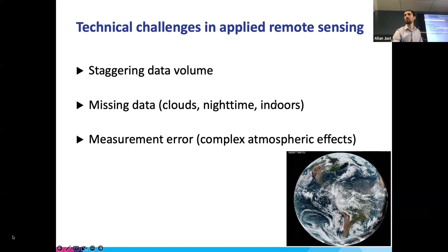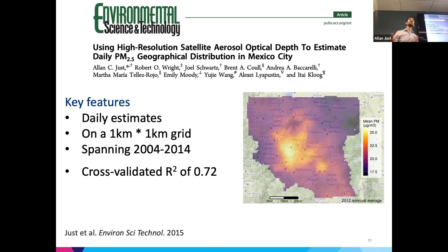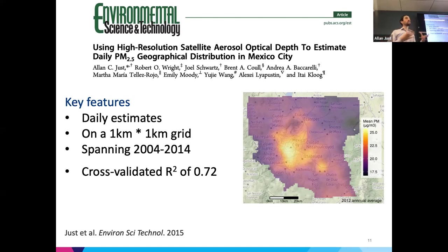One of the first projects I worked on was building a spatio-temporal model at a one-kilometer resolution for Mexico City over the course of a couple of years. This model allowed us to leverage health data from cohorts of participants in human health studies. The basic mechanism of assigning exposures — what we think people would breathe on average where they live — is based on a linkage from your residential address history. If you're prospectively enrolling people, you ask them where they live and stay up to date on whether they move.